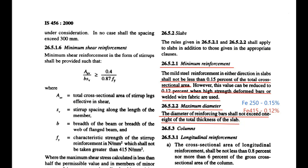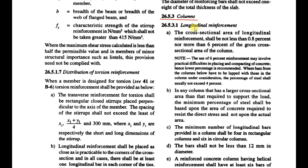For the maximum diameter of reinforcing bars in slabs, the diameter shall not exceed one-eighth of the total thickness of the slab. For example, for a 150 mm thick slab: one-eighth of 150 mm = 18.75 mm. Since 18 mm dia bars are not practically available, we restrict this to 16 mm. So for a 150 mm slab, the bar diameter shall not exceed 16 mm.